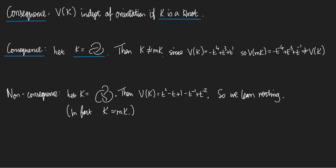Another consequence: take K to be the left-handed trefoil. Then K is not equivalent to its mirror. We know the Jones polynomial of K is −T⁴ + T³ + T. The Jones polynomial of its mirror is obtained by substituting T inverse for T, giving a different polynomial. The highest power on the left is +4, while on the right the highest power is −1, so they cannot possibly be equal. Therefore, if K were equivalent to its mirror these polynomials would be equal, but they're not, so K is not amphichiral.